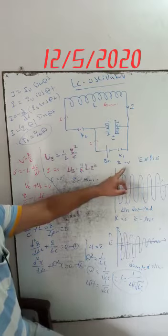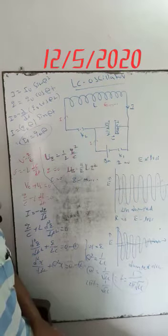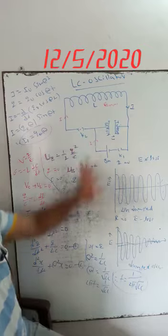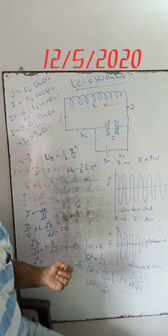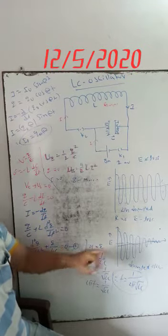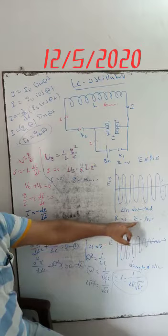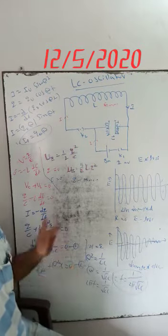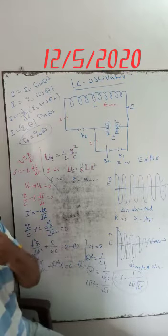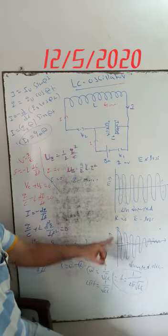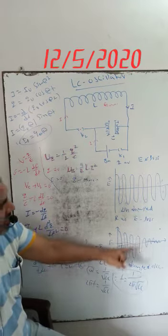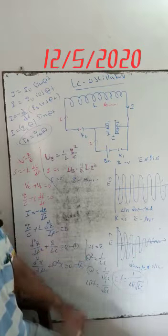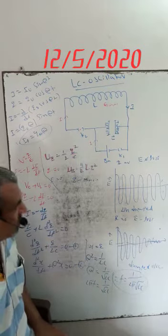In practice, the coil has certain resistance. With this resistance, there is some energy loss in the form of heat. The amplitude of oscillations goes on decreasing with time — that means damped oscillations are produced.